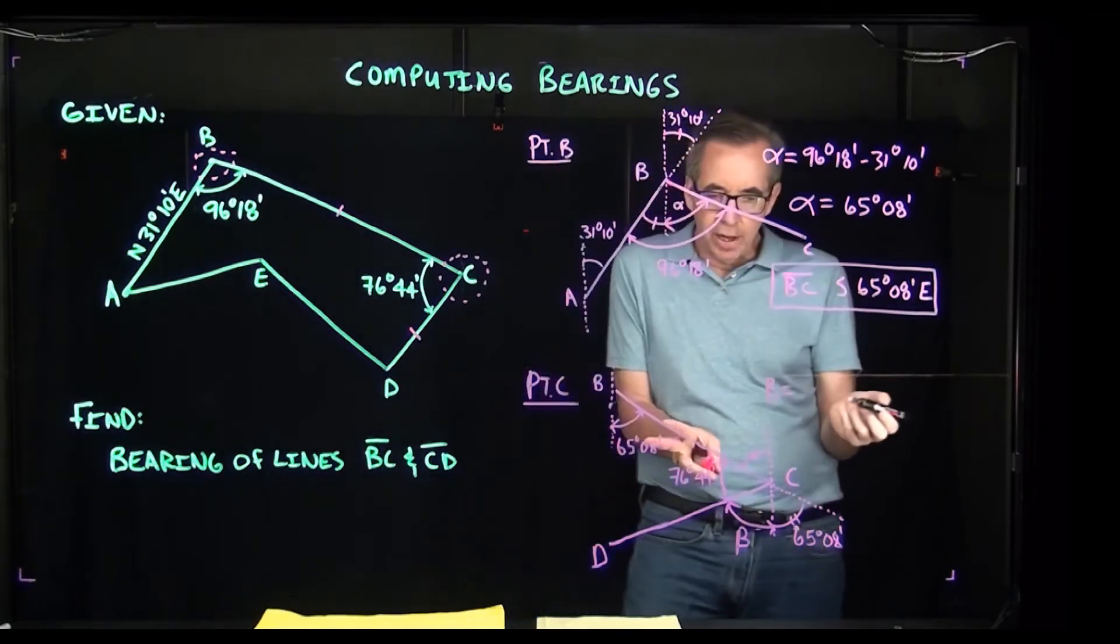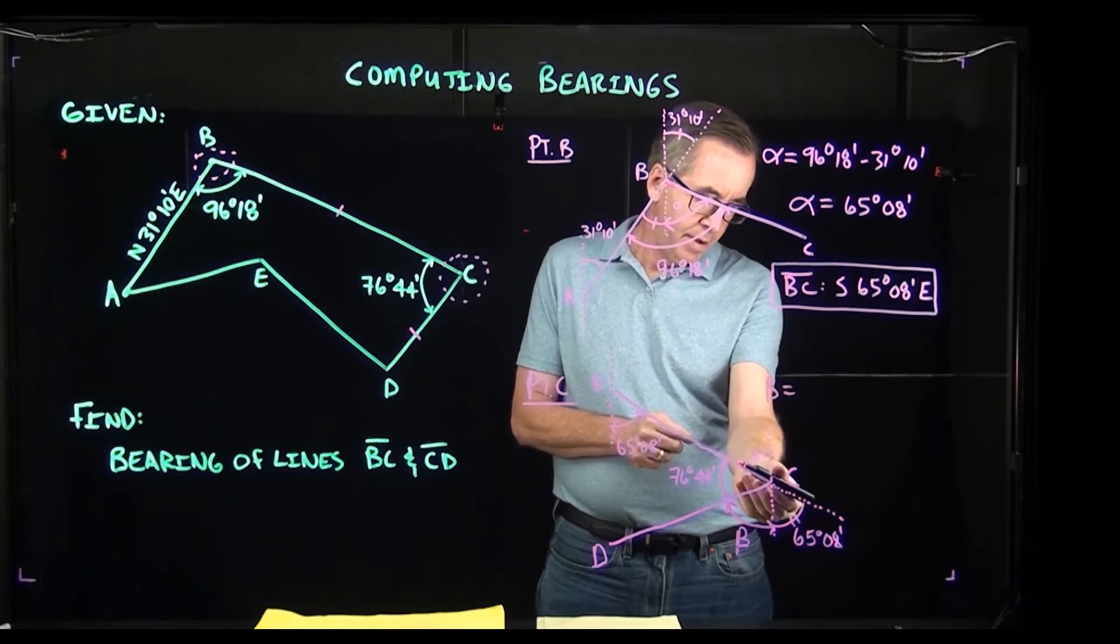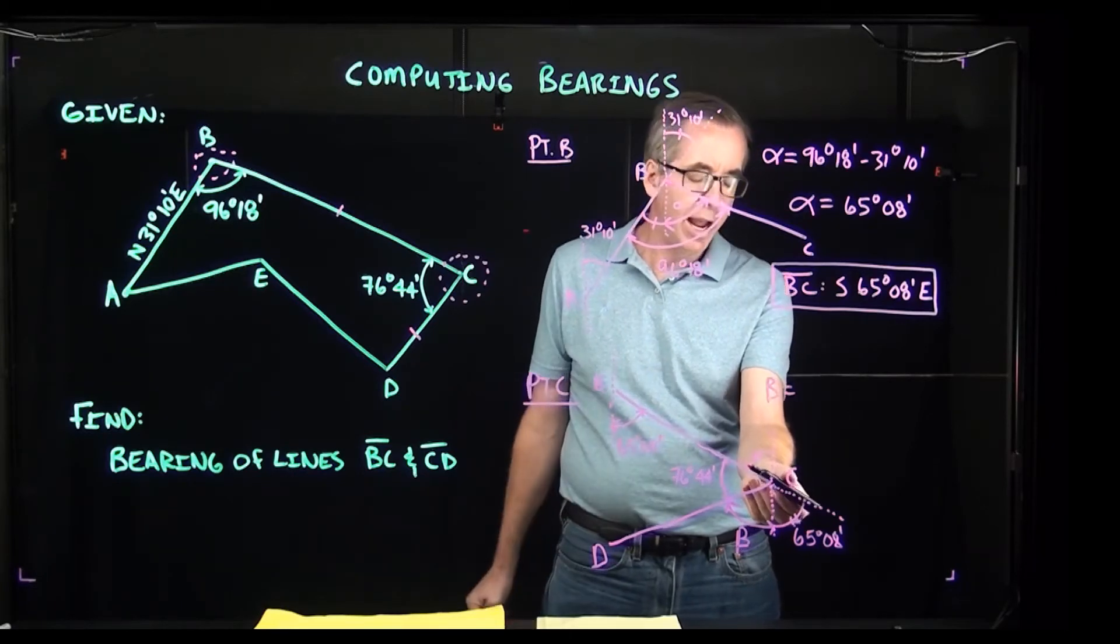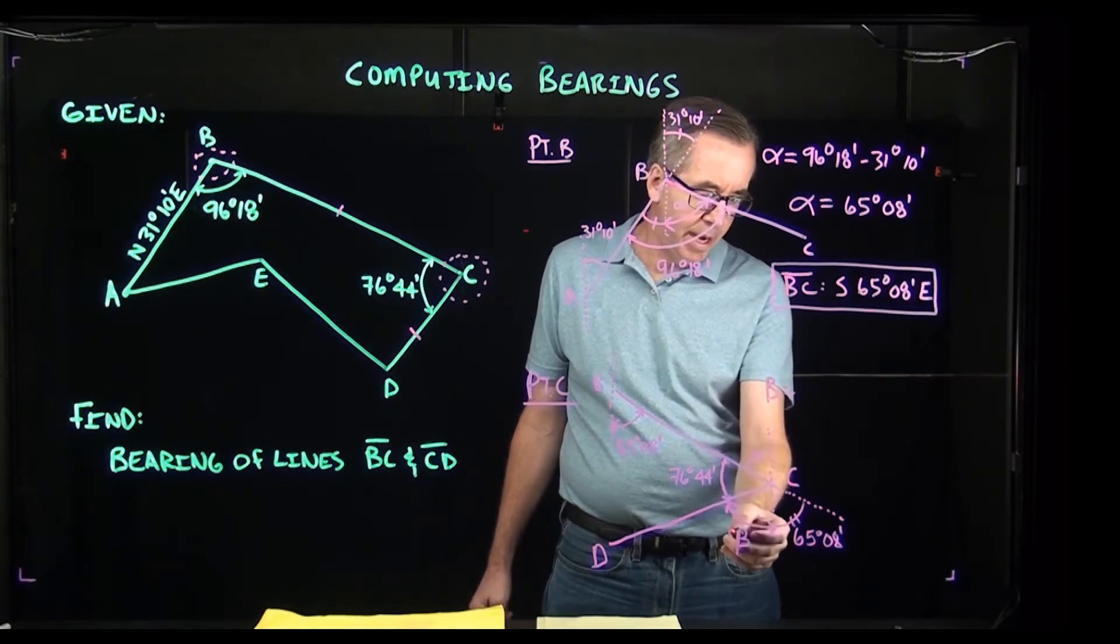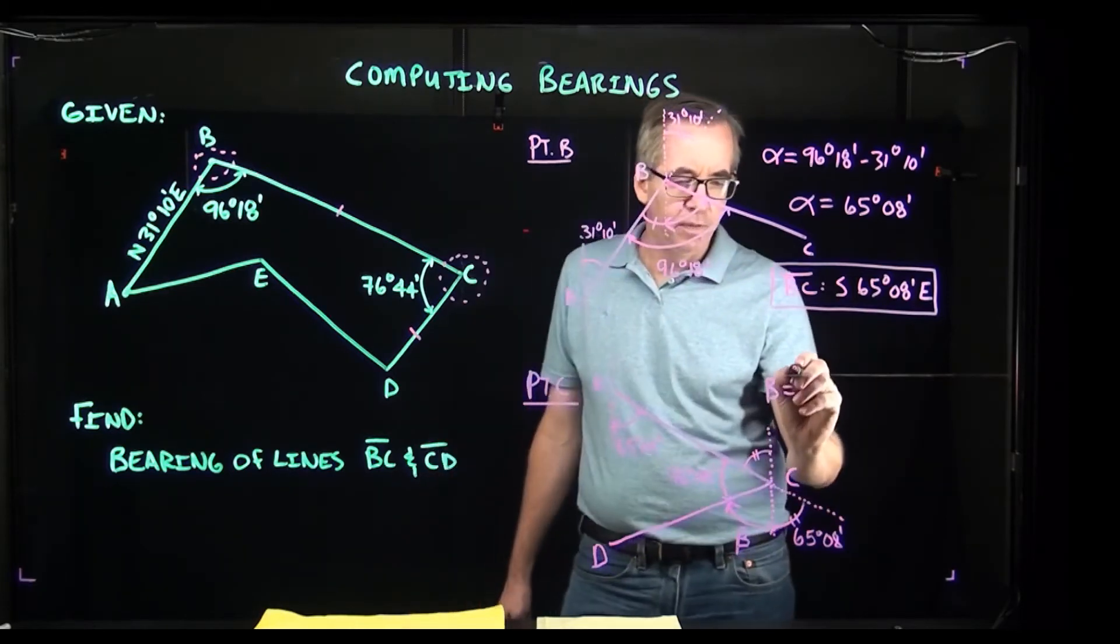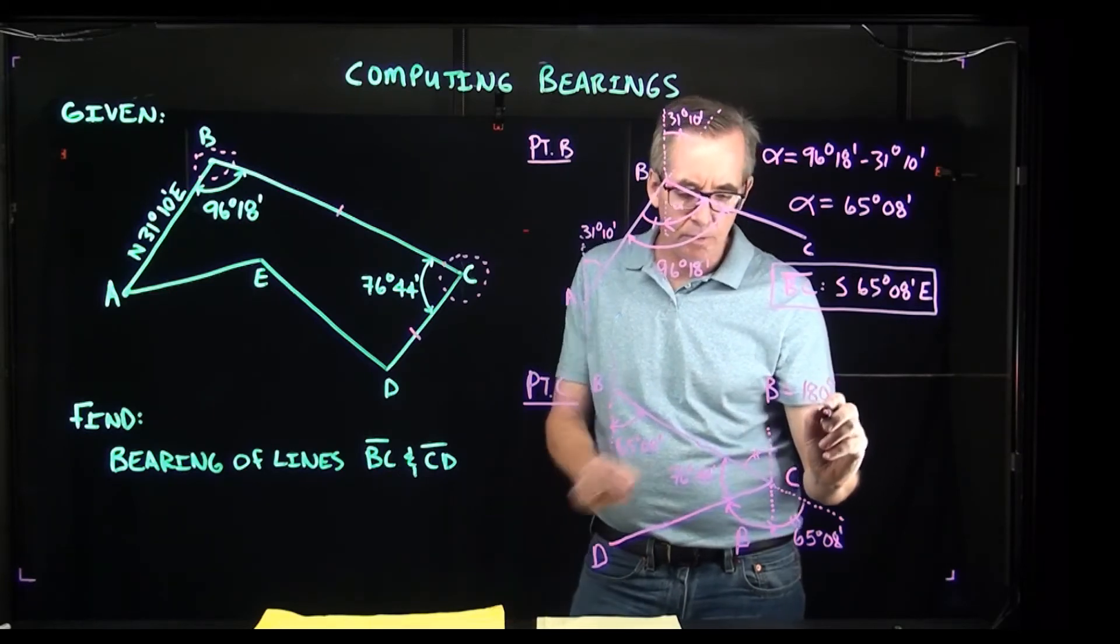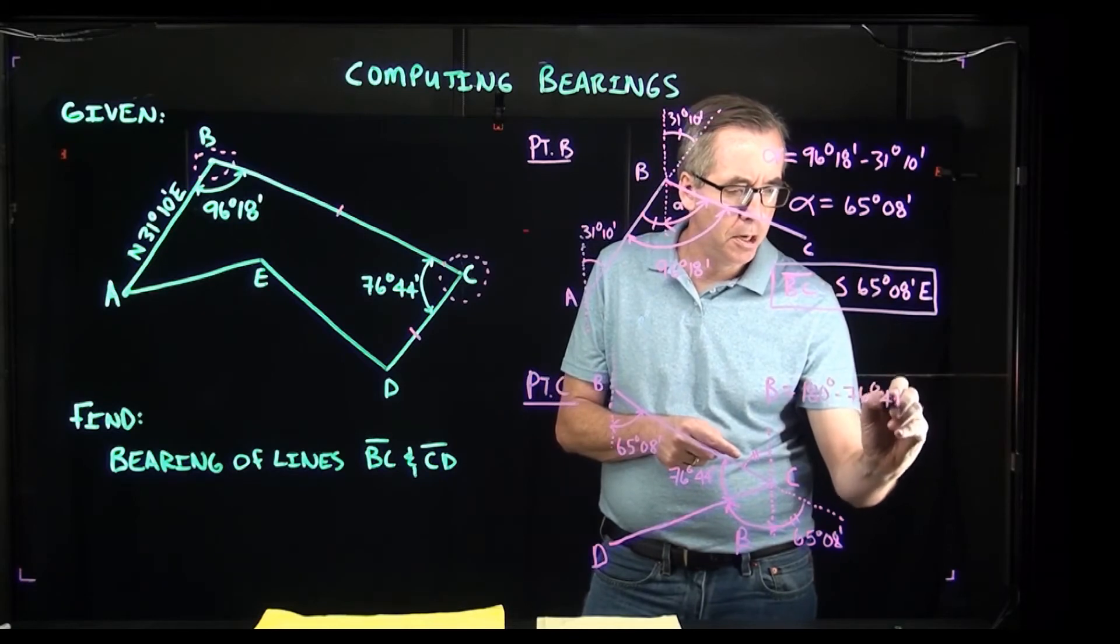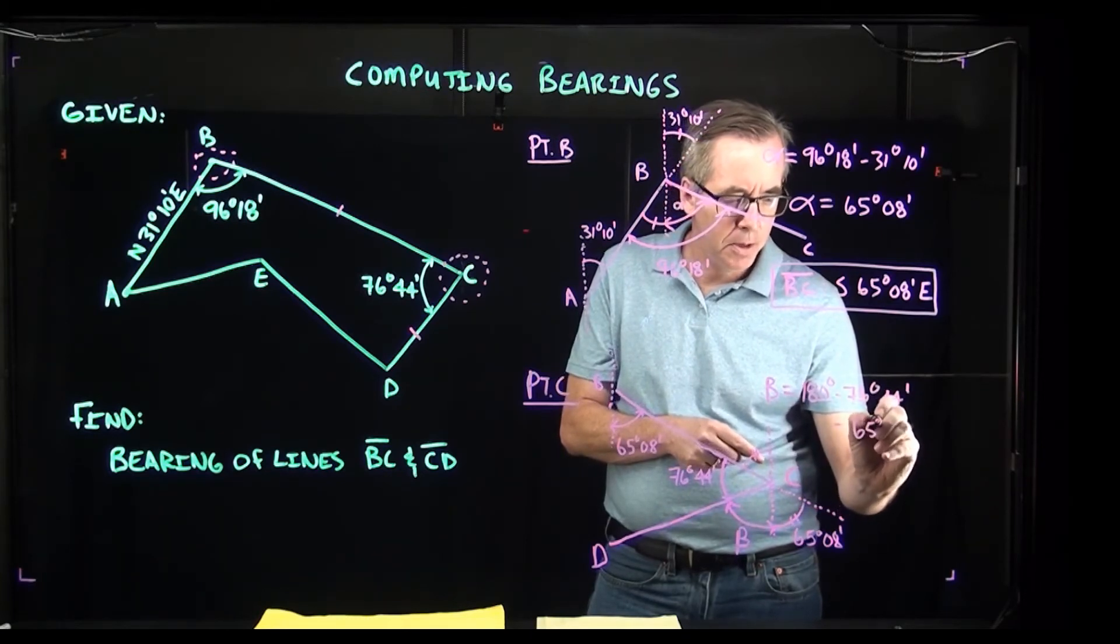Looking at my drawing here, it's not a great drawing but it's clear enough for me to see a couple things. I can see since I have a straight line going through here, I can see that this is a supplementary angle, meaning that if I add the 76 plus the beta plus this, those three angles should be 180 degrees. So if I take 180 and I subtract the 76 degrees 44 minutes and I subtract the 65 degrees 08 minutes, I should get beta.